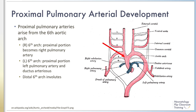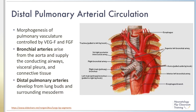The right pulmonary artery develops from the proximal part of the sixth aortic arch, which is noted by the red arrow. Both the left pulmonary artery and the ductus arteriosus arise from the left sixth arch. The distal portion of the sixth arch involutes during fetal development.